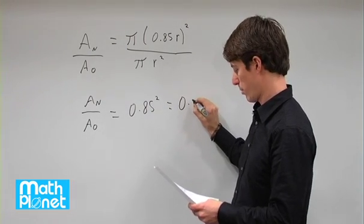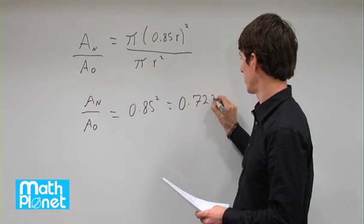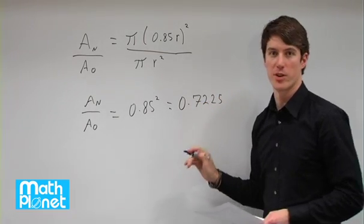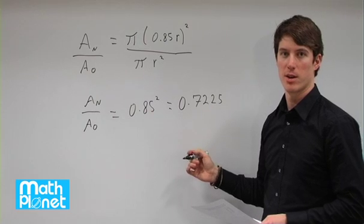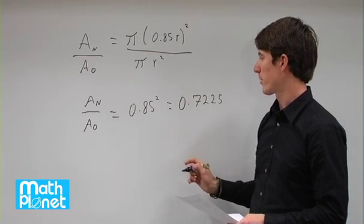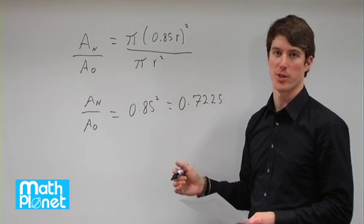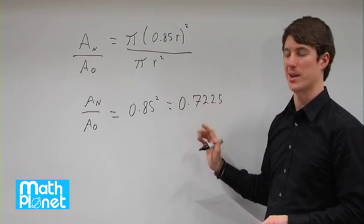This is equal to 0.7225. So this is the new percentage of the area for the smaller circle. We want to find by what percentage that has decreased though, so we need to find 1 minus that.